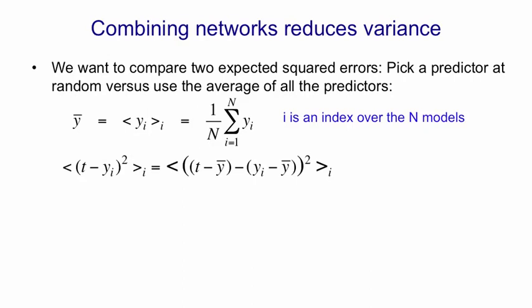Now, if we look at the expected squared error we get if we chose a predictor at random, what we'd have to do is compare that predictor with the target, take the squared difference, and then average that over all the predictors. That's what's on the left hand side there. If I simply add a y bar and subtract a y bar, I don't change the value, and now it's going to be easier to do some manipulations. I can now multiply out that square, and inside these expectation brackets I have t minus y bar squared, yi minus y bar squared, and t minus y bar into yi minus y bar, which as we'll see will disappear.